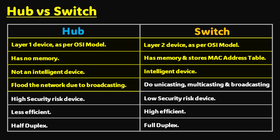Hubs flood the network due to their broadcasting behavior, whereas a switch can perform unicasting, multicasting, and broadcasting depending on needs. A hub is a security risk because of broadcasting, whereas security risks are very low with a switch. Hubs are less efficient and switches are more efficient. A hub always works in half-duplex mode — it cannot send and receive data at the same time — whereas a switch works in full-duplex mode and can send and receive data simultaneously. That is the basic difference between a hub and a switch.